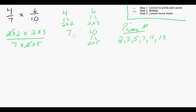Moving to step 2, we're going to multiply that out. 2 times 2 is 4, times 3 is 12. And on the bottom, 7 times 5 is 35. Now, because we've converted to prime factors and canceled out, our final fraction should be in lowest terms. But as always, we're just going to double-check to ensure that we're in lowest terms.